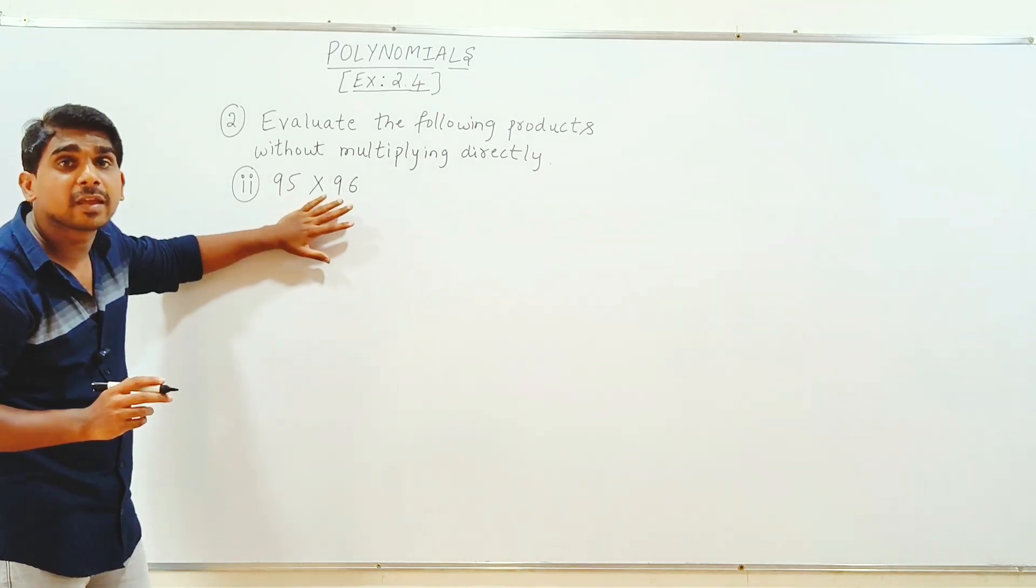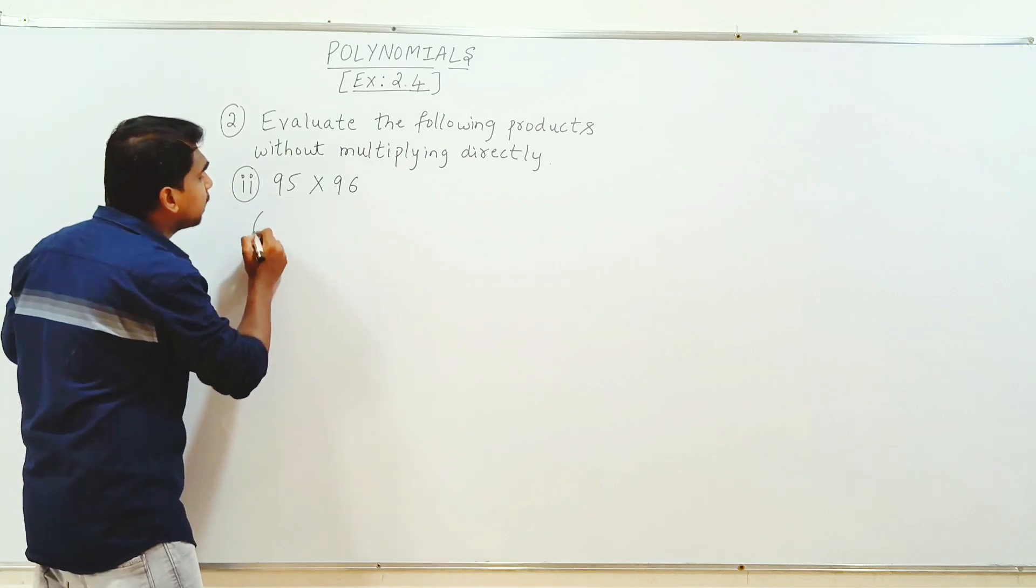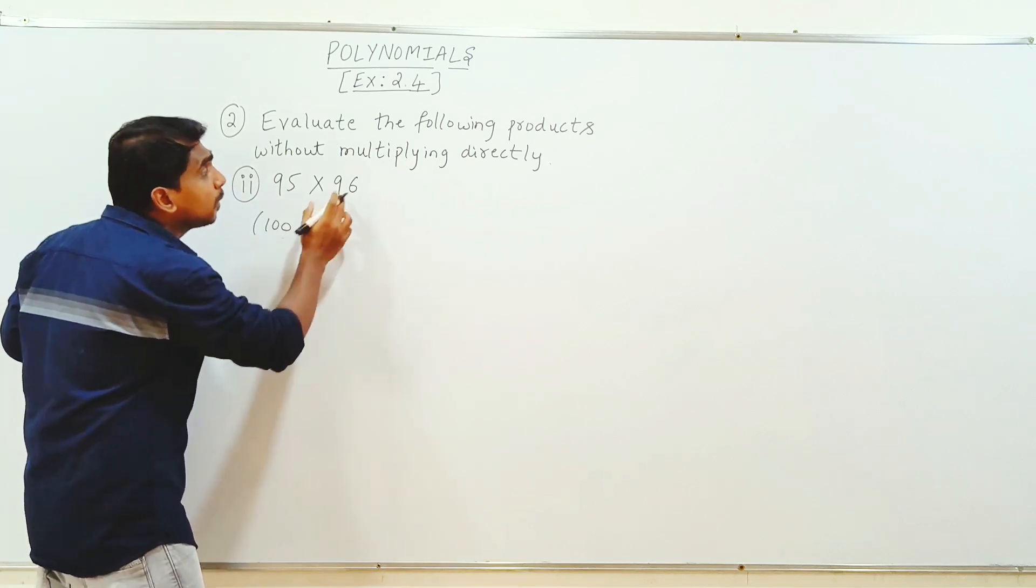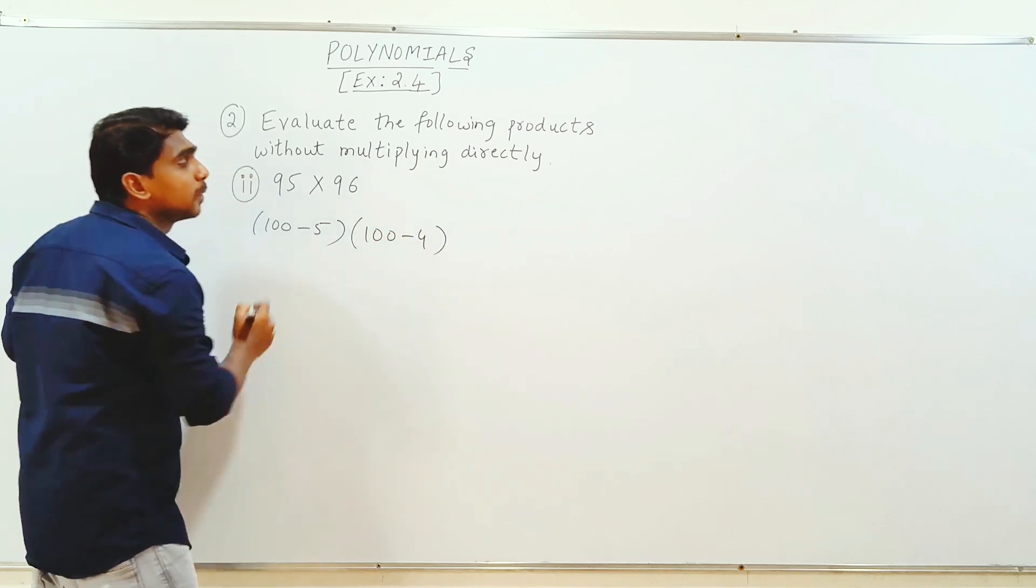Now, direct multiply model or the formula used. 95 to 90, 100 minus 5. 96 to 90, 100 minus 4.